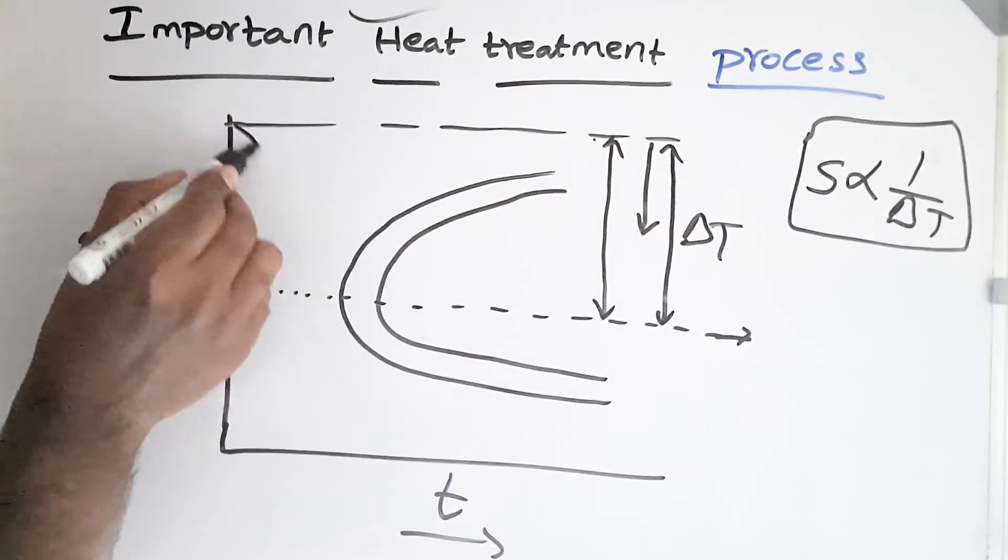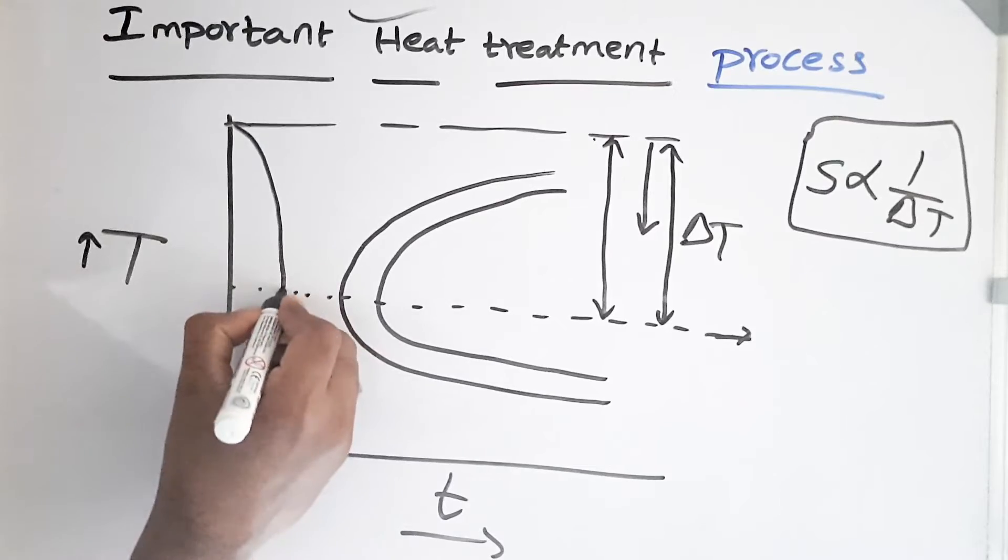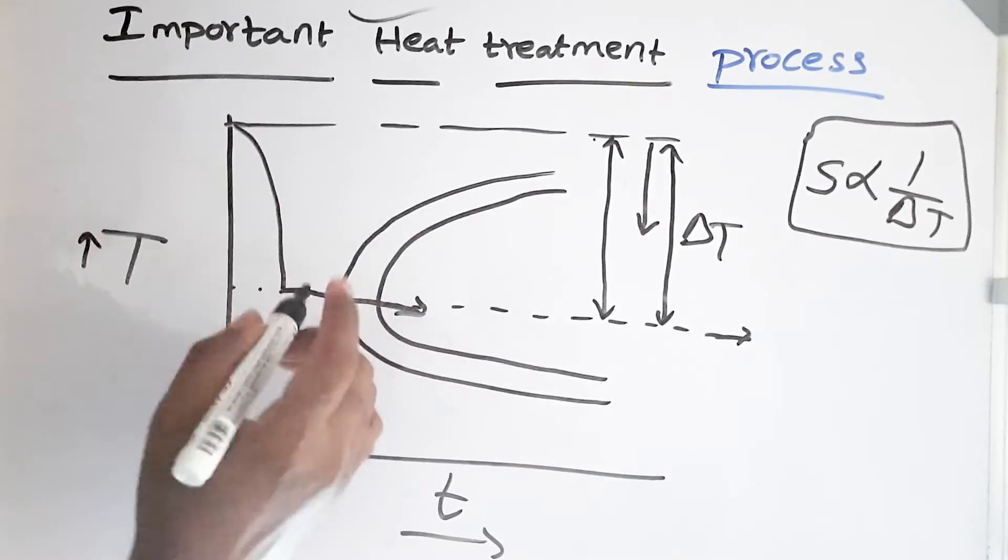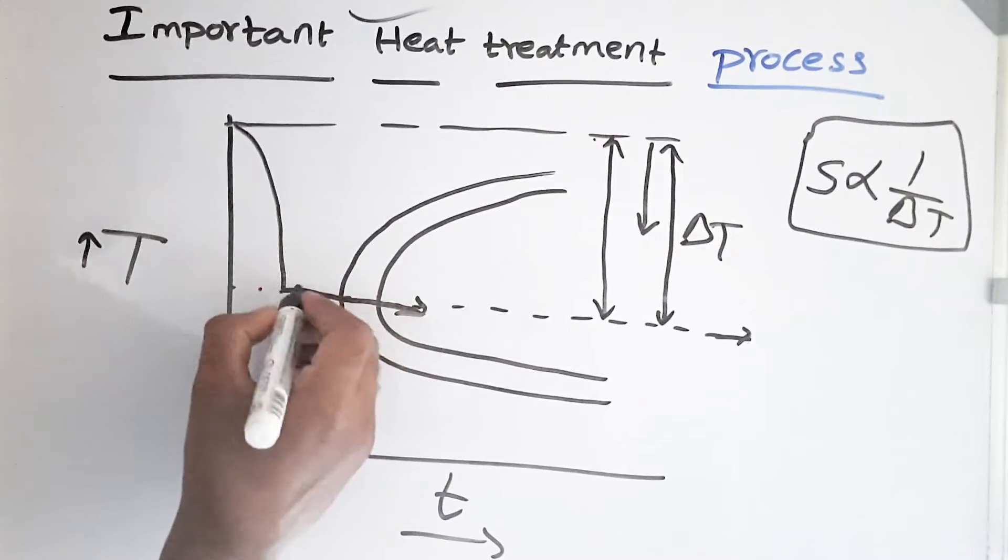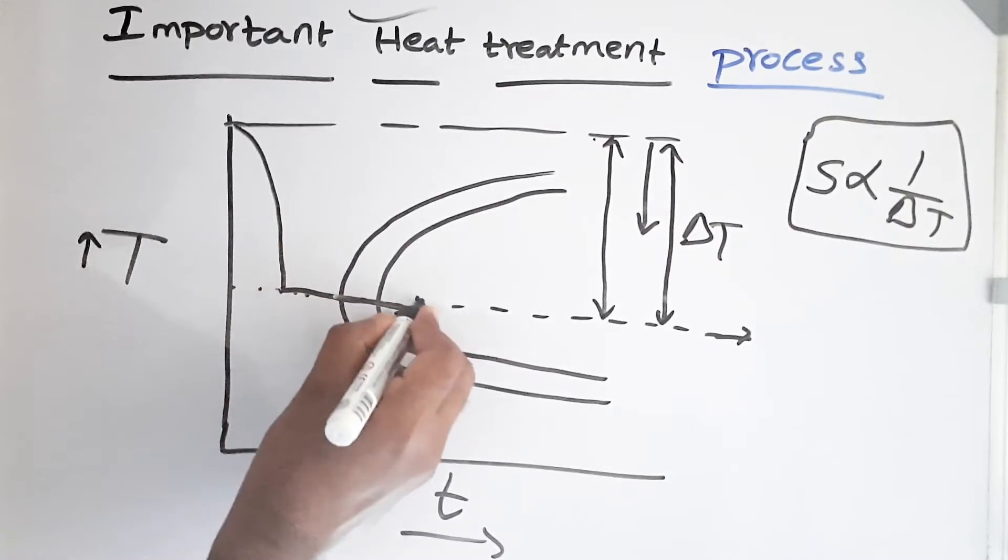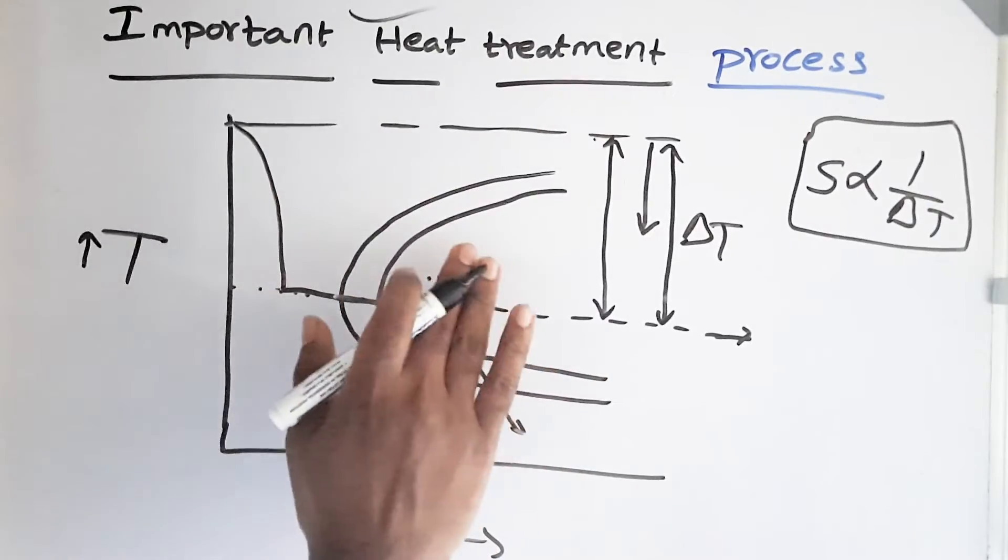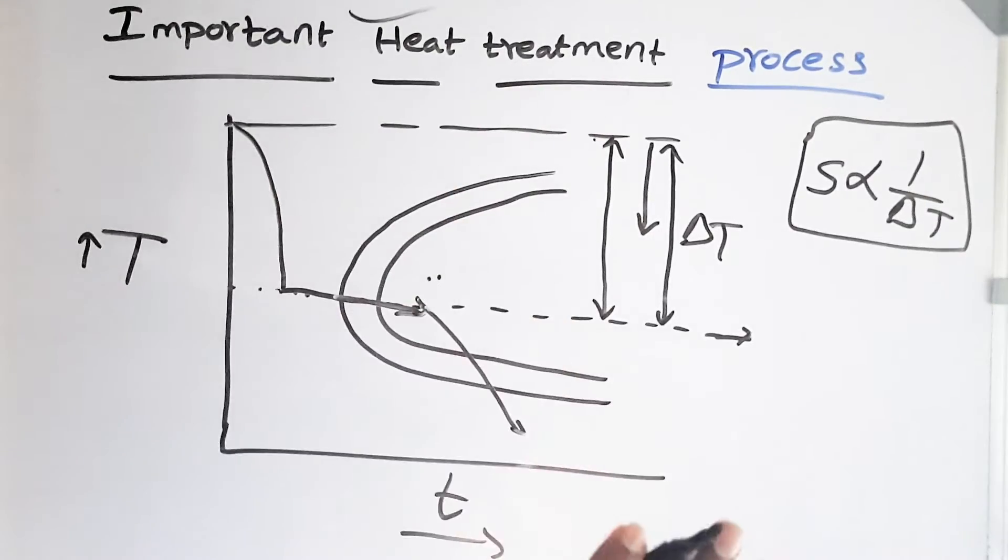What we do here, we quench the sample. We quench the sample and we make it transform at the nose of our TTT curve. So this is our heat treatment. Here, complete austenite and at nose, it completely transforms to pearlite followed by cooling to the room temperature. Here, as our structure is pearlite, after cooling, there is no change in the structure of the metal.